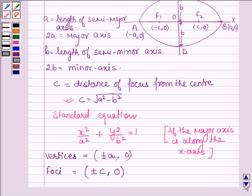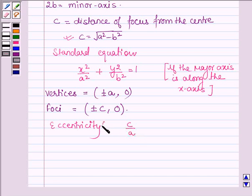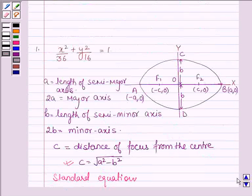We also have to find the eccentricity, which is given by C upon A and is denoted by E. And the length of the latus rectum is equal to 2B² upon A. So this is some general information about the ellipse, and with the help of these ideas we are going to solve the above problem.